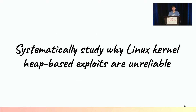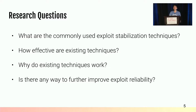To fill the gap, we want to study this problem. More specifically, we want to systematically study why Linux kernel heap-based exploits are unreliable. To perform the systematic study, we want to answer a few research questions: What are the commonly used exploit stabilization techniques? How effective are existing techniques — are they as effective as expected? And why do existing techniques work? With knowledge from the systematic study, can we find new ways to further improve exploit reliability?